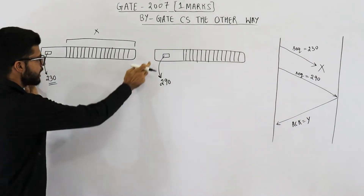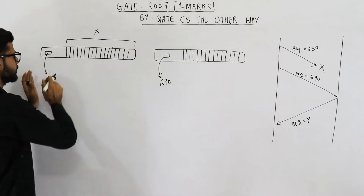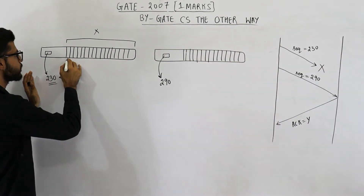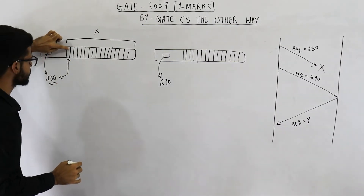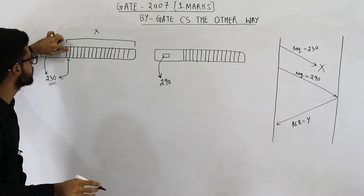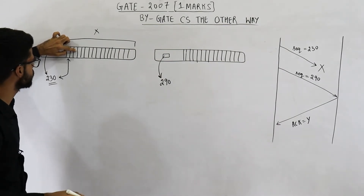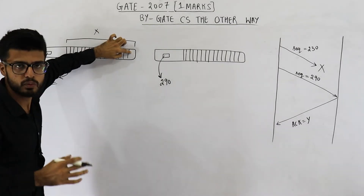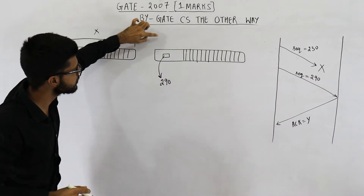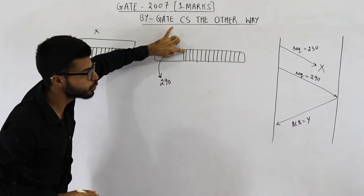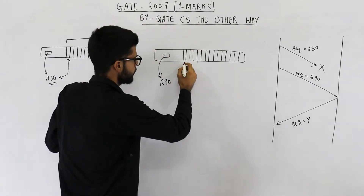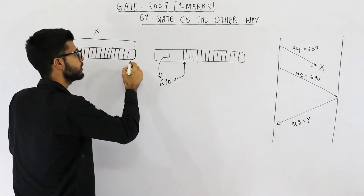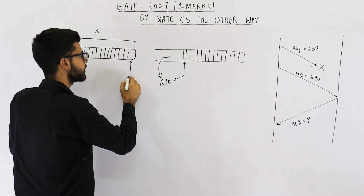So if the sequence number of this segment is 230, this means the first byte also has sequence number 230 — then 231, 232, 233, and so on. This last byte will also have some sequence number. After this, we have byte number 290. Similarly, this byte will have sequence number 290. So the sequence number of the last byte of the first segment is obviously 289.